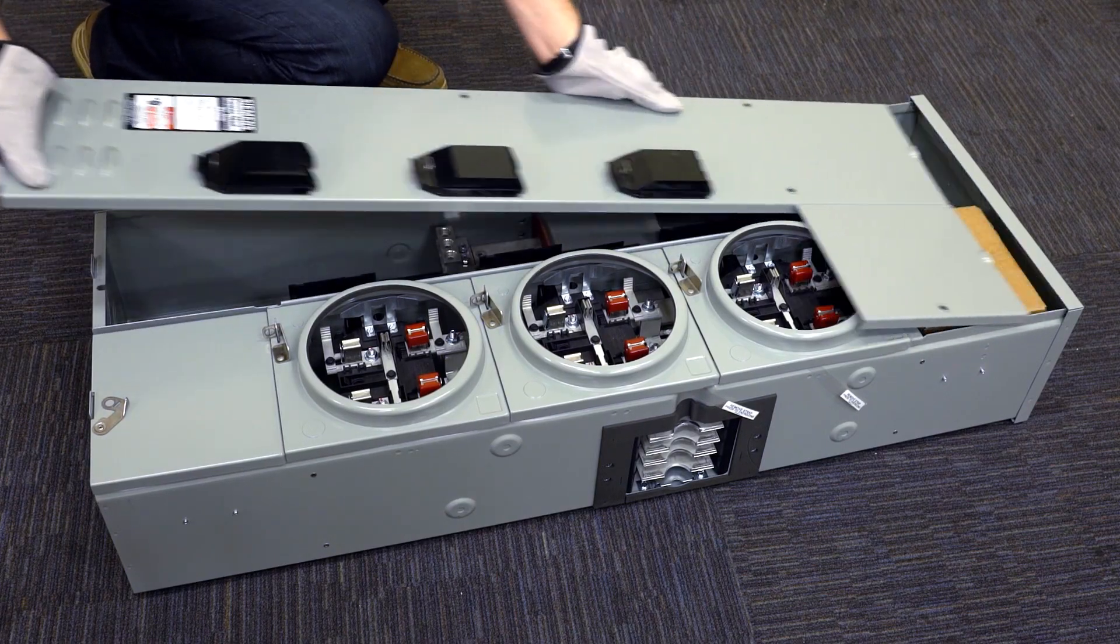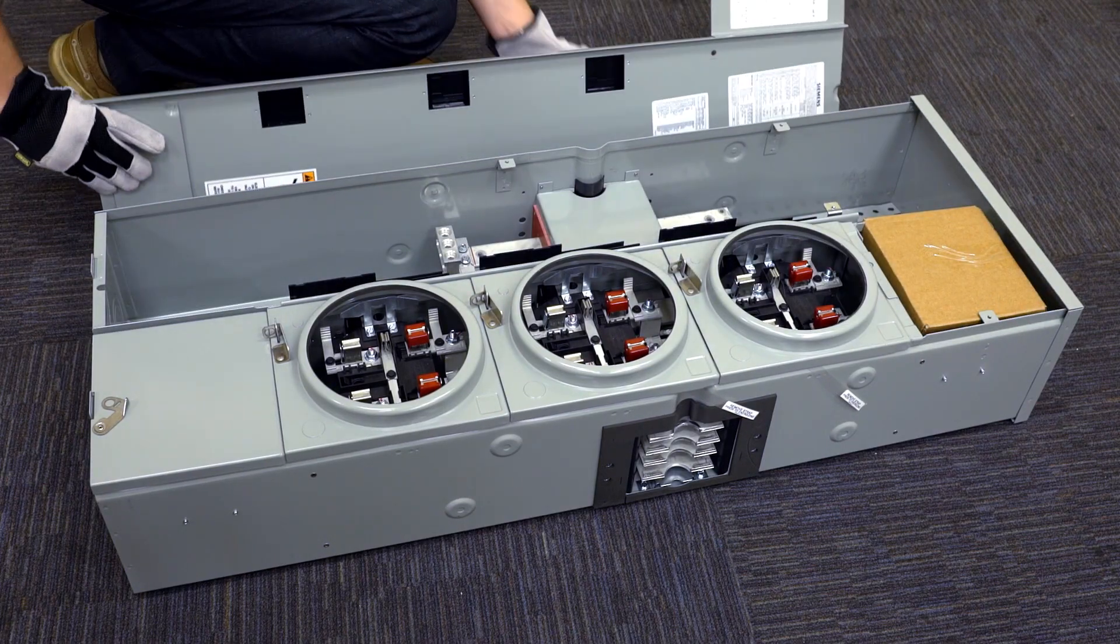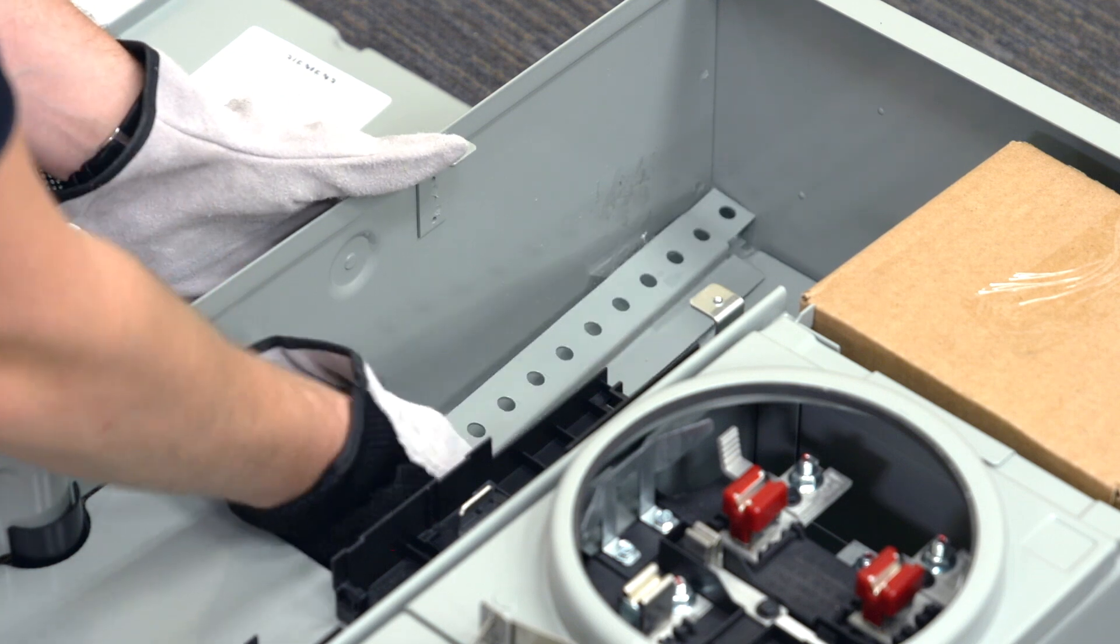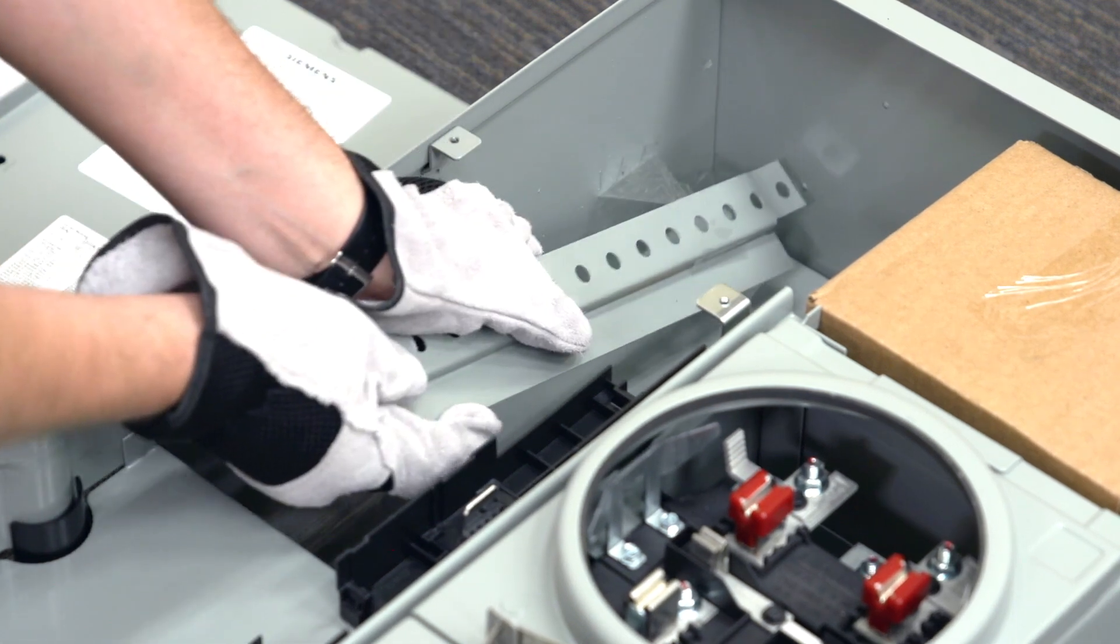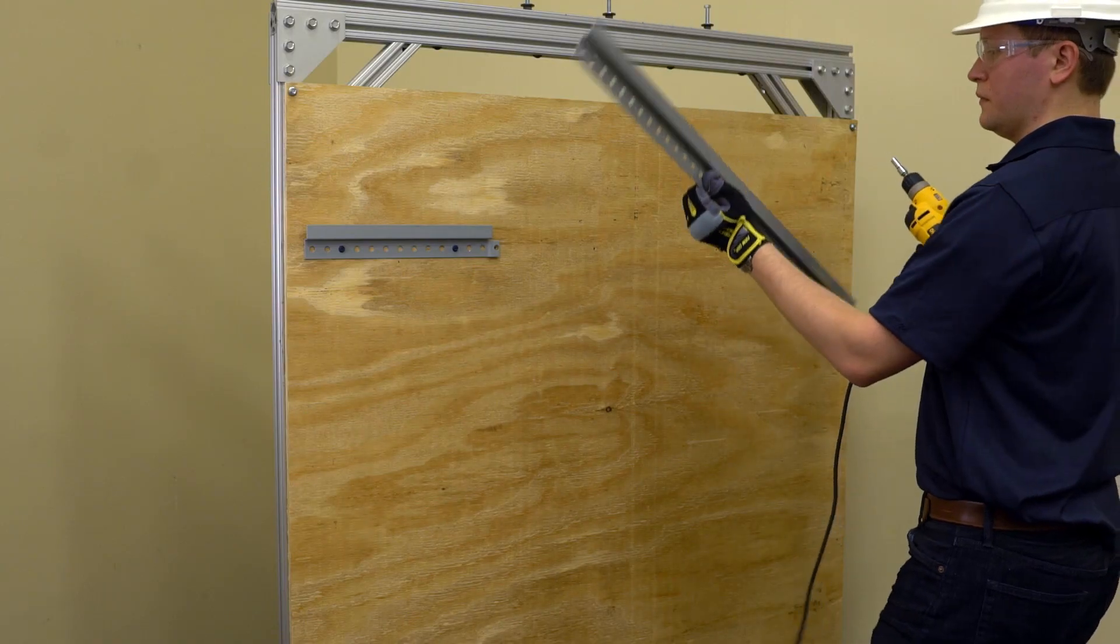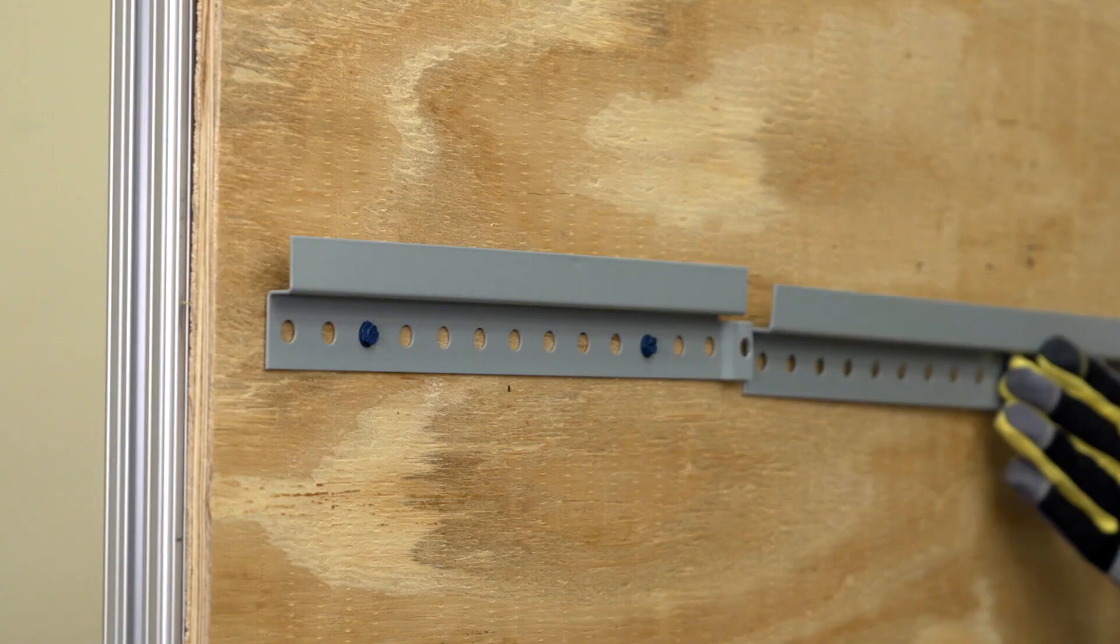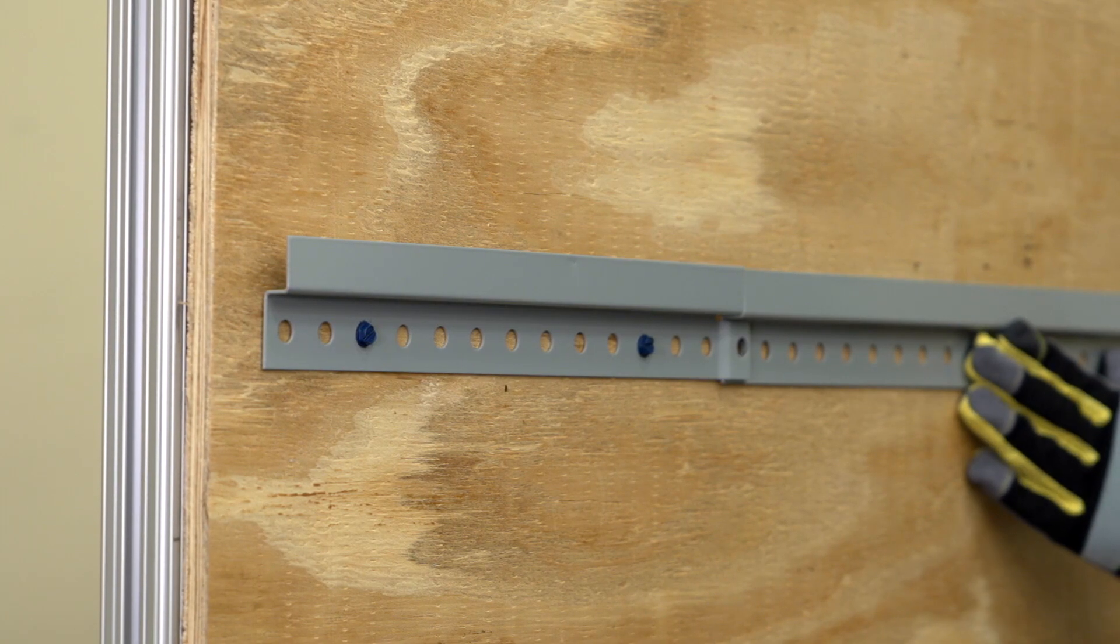All modules ship with an alignment rail, also known as a Z-rail. These rails are proportionate with the unit's length and are shipped within the enclosure. Longer Z-rails can also be purchased for improved ease of installation and reduced installation time.